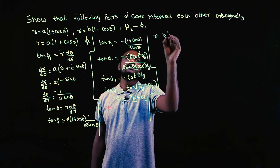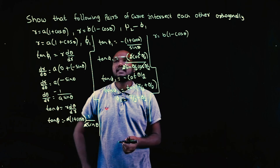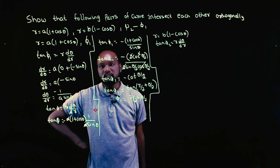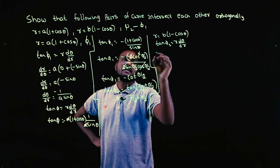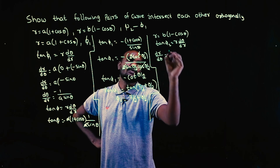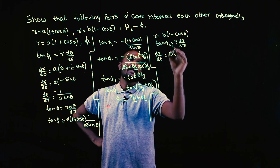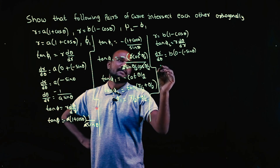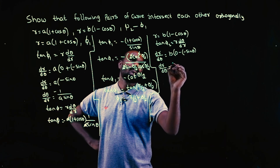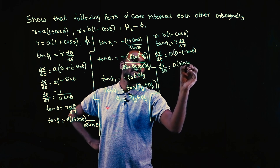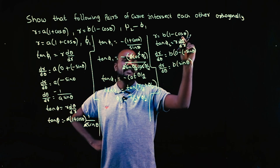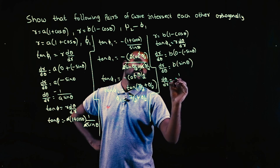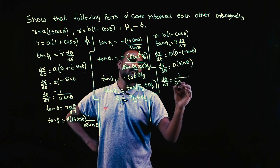Now for the second curve: r = b(1 - cosθ). Again, the formula is tan φ₂ = r · (dθ/dr). Differentiating: the derivative of -cosθ is +sinθ, so dr/dθ = b·sinθ. Reversing: dθ/dr = 1/(b·sinθ).